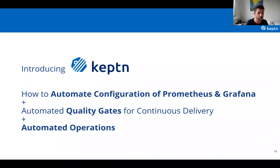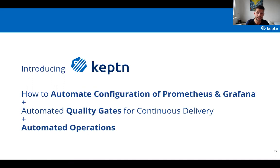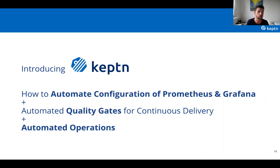This brings me to the open source project I've been working on with a bigger team — how we think you can automate the configuration of Prometheus, Grafana, and other tools, use it for automating quality gates for continuous delivery, and automate parts of your operations. You really want to know: are you allowed to put something into production? Does it satisfy a given set of quality criteria? If not, you hold it back — that's what we define as a quality gate. And if something goes wrong in production, you want to automatically react on that misbehaving microservice.